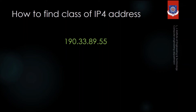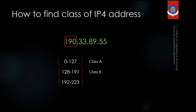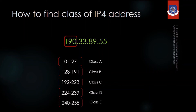To find the class of an IP address, we look at the first number. If the first number is in the range 0 to 127, it is Class A. If it is 128 to 191, it is Class B. If it is 192 to 223, it is Class C. If it is 224 to 239, it is Class D. And if it is 240 to 255, it is Class E.